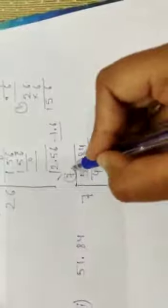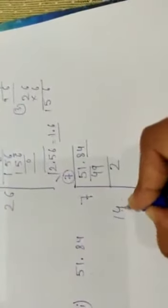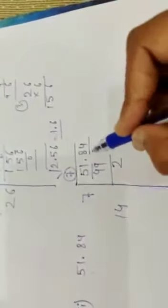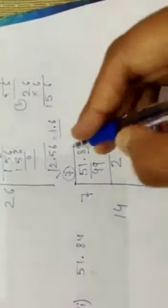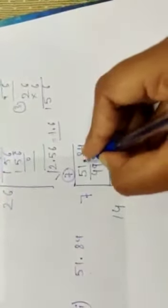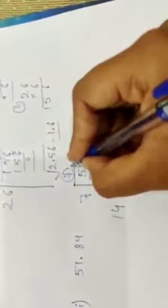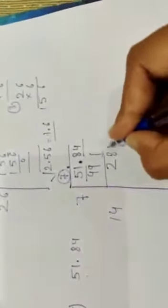Now we have to double this quotient. It's 14. Now we have to bring down this pair 84. But before that we are having decimal here, so just put this decimal after 7. Now just bring down this pair. It's 84, so it is 284.